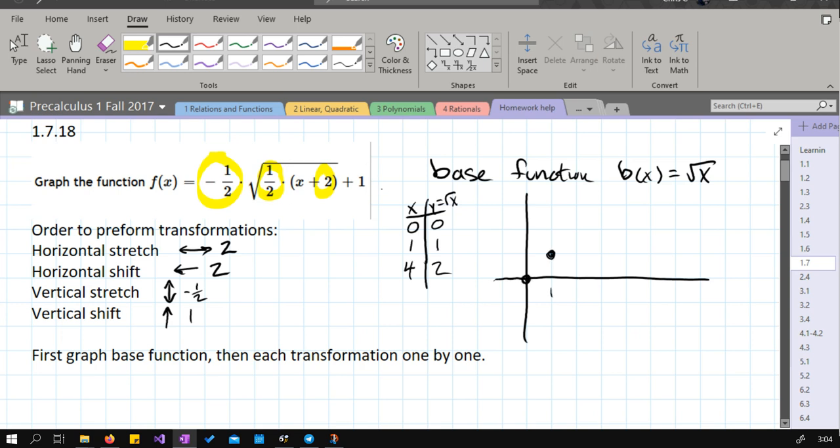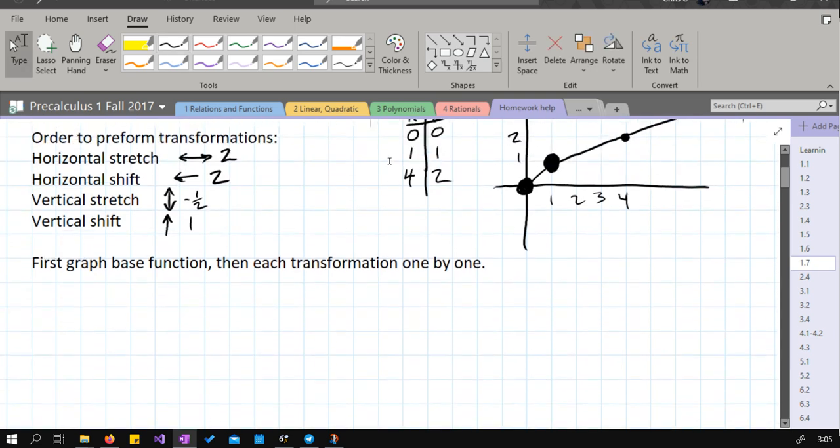Zero, zero, one, one, four, two, right there. I could keep going bigger and bigger. We get nine, three. So what the graph's going to look like, it's this curve like that. We're going to focus on two points in particular, the two that I just made really extra obvious right there. Zero, zero and one, one.